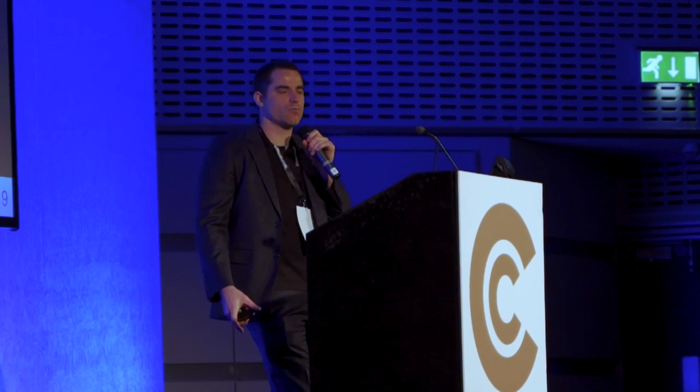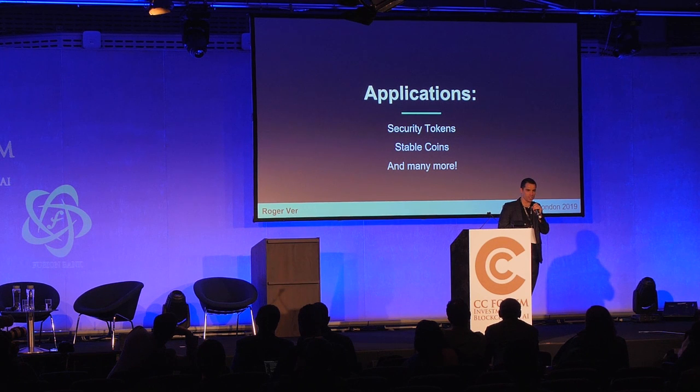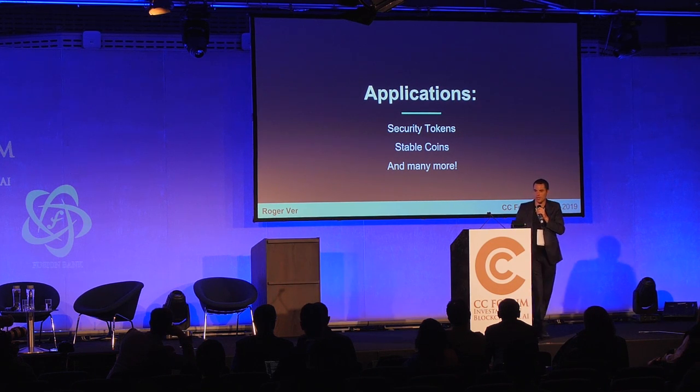Let's talk about the applications. We've heard people talk about security token offerings. Now we have a way where not only can you have security tokens, but every single one of those token holders can receive dividend payments right there on the blockchain. The tokens act as the equivalent of anonymous bearer shares. Historically we've had bearer shares — that's not new. And historically we've had dividend payments. But in the entire history of humankind, we've never had anonymous bearer shares that are also able to receive dividend payments. I think this is going to be incredibly popular.